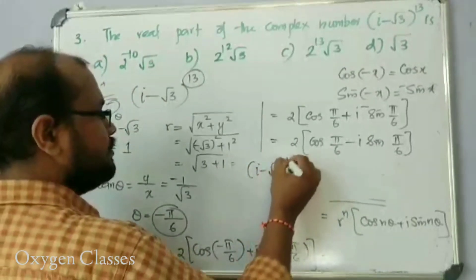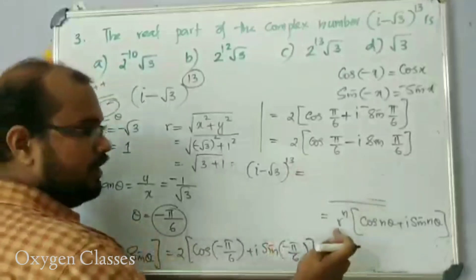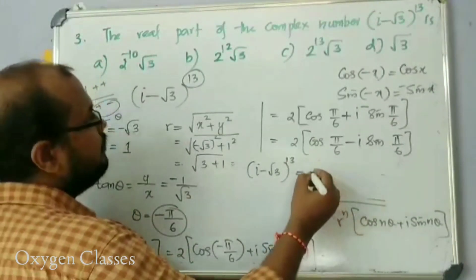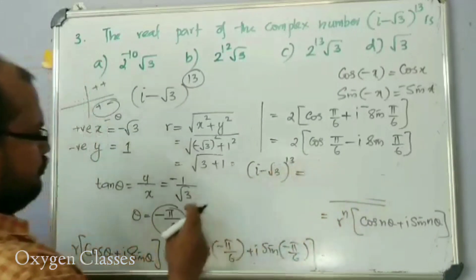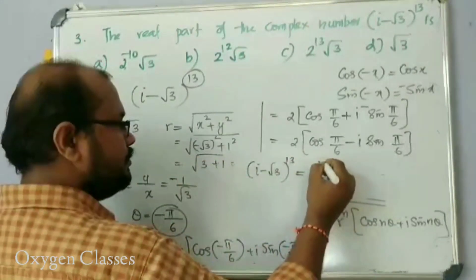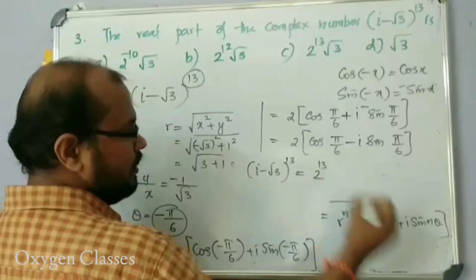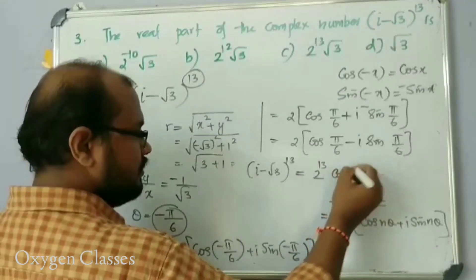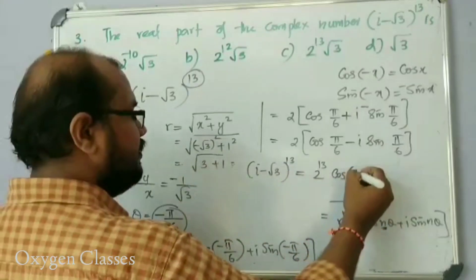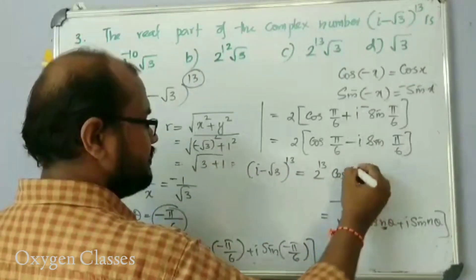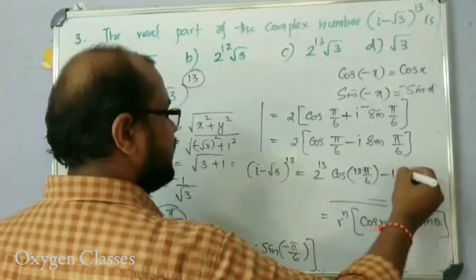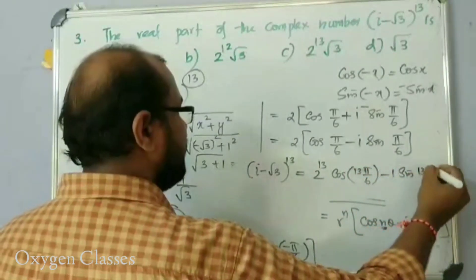Raising to the power 13: r = 2, so r raised to 13 = 2 raised to 13. Applying De Moivre's theorem, the expression becomes 2 raise to 13 into cos(13 times 5 pi by 6) minus i sine(13 times 5 pi by 6).